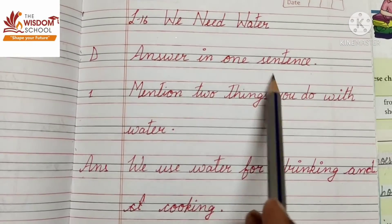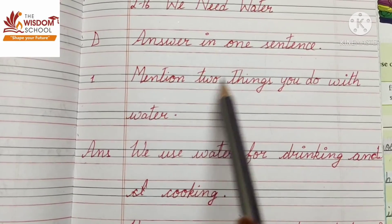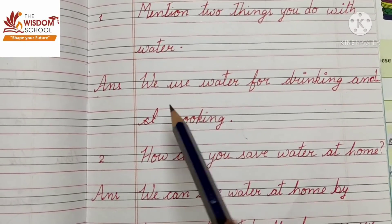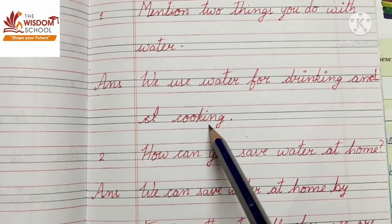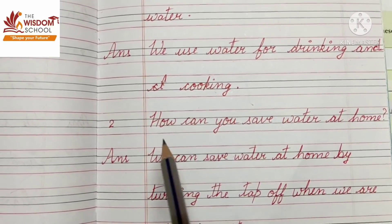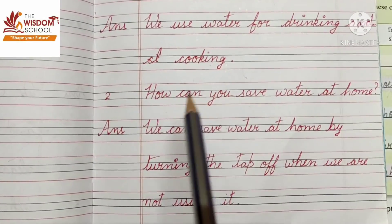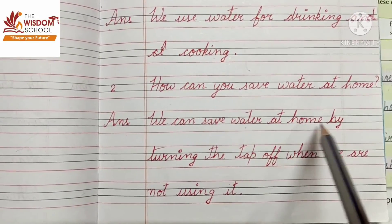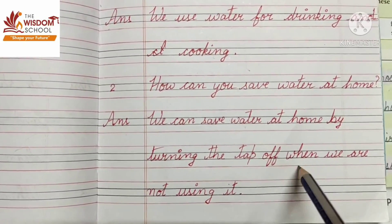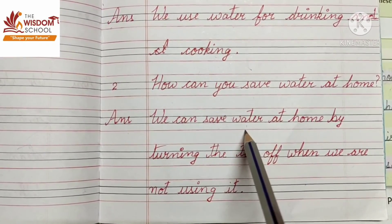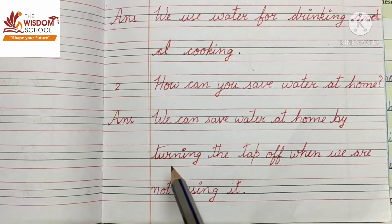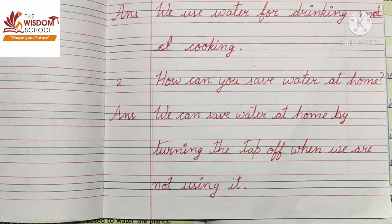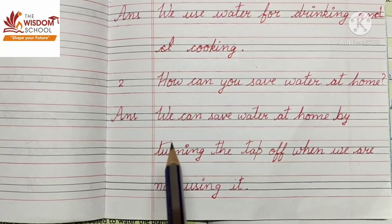Answer in one sentence. Mention two things you do with water: we use water for drinking and cooking. How can you save water at home? We can save water at home by turning the tap off when we are not using it. This is the simplest way of saving water at home.